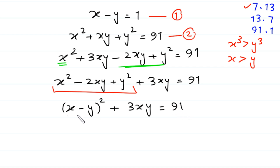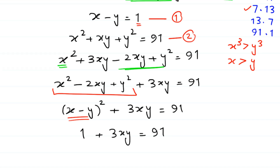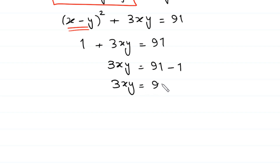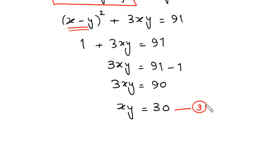Now we substitute the value of x minus y equal to 1 from Equation 1: 1 squared plus 3xy equals 91, which gives 1 plus 3xy equals 91. Moving 1 to the right side: 3xy equals 90. Dividing both sides by 3, we get xy equals 30. We name this Equation 3.